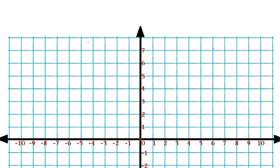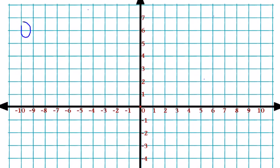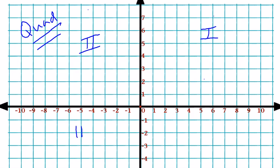Every coordinate plane is divided into four equal sections, or quadrants, with the prefix quad meaning four of something. The quadrant in the upper right-hand corner is the first quadrant. To the left of that, we have the second quadrant. Below the second quadrant, we have the third quadrant, and to the right of the third quadrant, we have the fourth quadrant. The axis moving from left to right, or in the horizontal direction, is called the x-axis. The axis moving in the vertical direction, up and down, is called the y-axis.